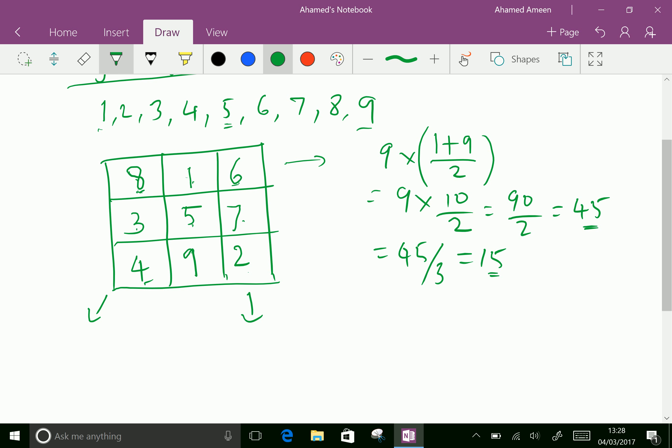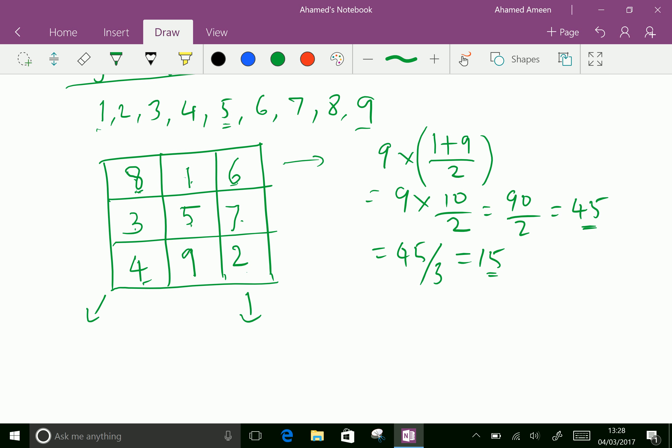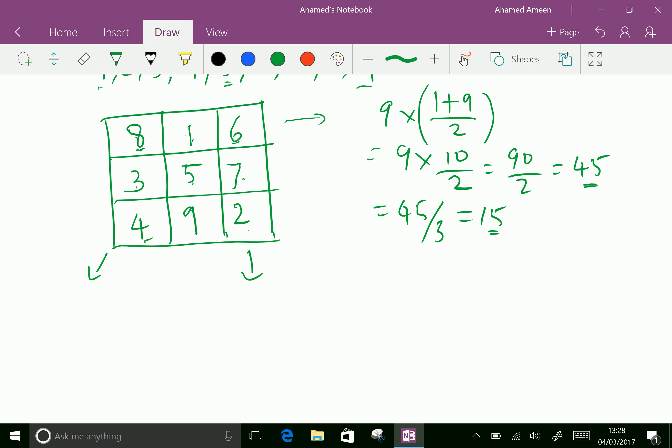So all numbers are filled. Now we can check each row. 8 plus 1 is 9, 9 plus 6 is 15. 3 plus 5 is 8, 8 plus 7 is 15.